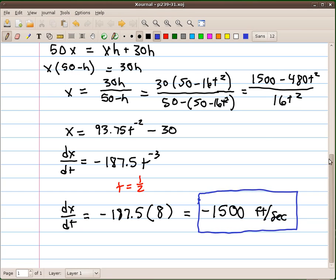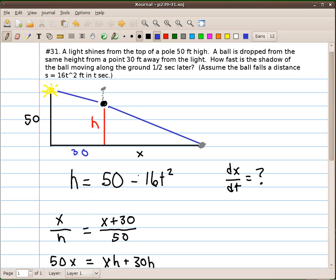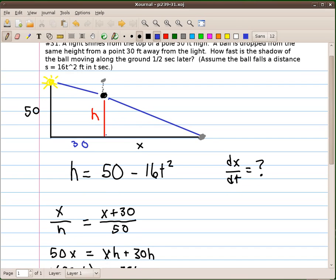And I think you'll agree the challenge on this problem was to find a way to get an equation for x and h and make sure that we relate that to time. And I think we did that by using this substitution right here, h equals 50 minus 16t squared.